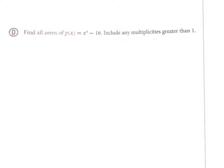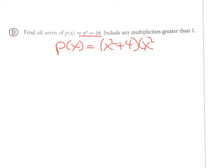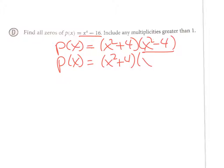Find all zeros including multiplicities greater than one. This is x⁴, so I'm looking for four answers. There are differences of squares here: x⁴ − 16 factors as (x² + 4)(x² − 4). Now x² − 4 is another difference of squares giving (x + 2)(x − 2), so two of my zeros are +2 and −2. But x² + 4 is a sum of squares, so it won't factor over the reals.